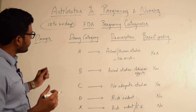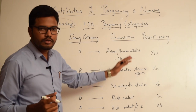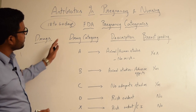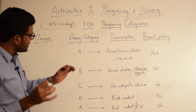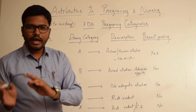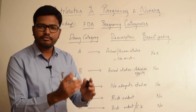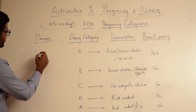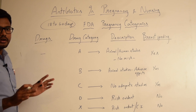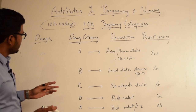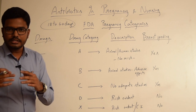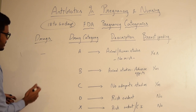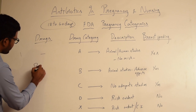Moving on to the various FDA categories of antibiotics: starting with drug category A, we have no antibiotics under this category. This means no antibiotic is absolutely safe for both the mother and fetus. Then we have drug category B, which includes the following groups of antibiotics.